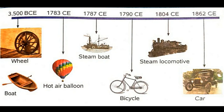Timelines help us to understand history. The arrangement of events in order or sequence of their occurrence is called chronological order. A timeline can display events that took place in days, weeks, months, or years. For example, in 3500 BCE, the wheel and boat were invented.